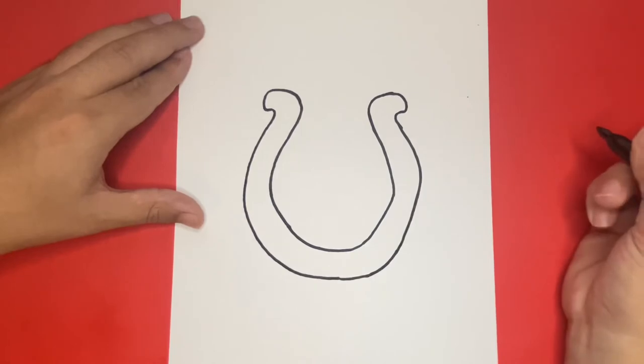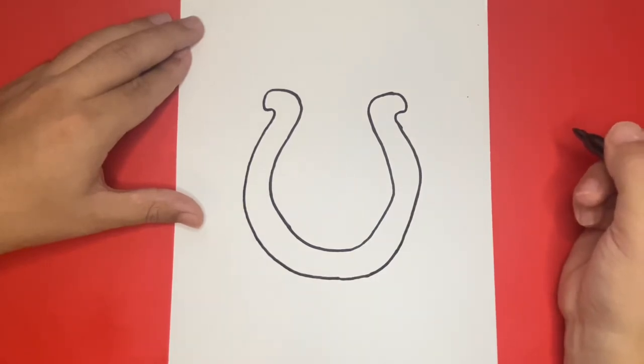Nice! Now that we're all done drawing the outline, let's go ahead and add the circles on the inside of the horseshoe.